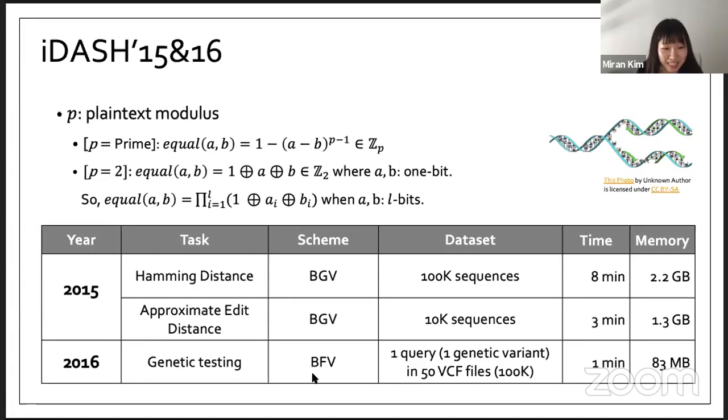In 2016, the task was applications to secure genetic testing on your VCR file. Given a list of up to 100k mutations, the task was to encrypt the whole data set using HE and enable the data owner to query the data set for the presence of specific genetic mutations. So it's a sort of string match. The best solution used a similar approach of the bitwise representation like 2015 solution. It takes around one minute to perform one query in 50 VCR files, and each file has 100k length.